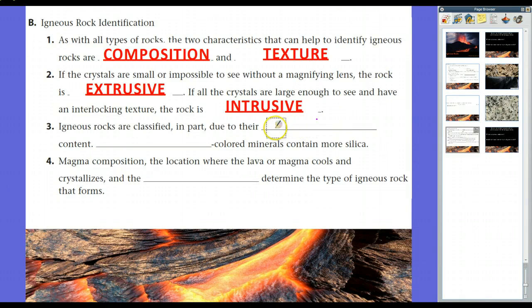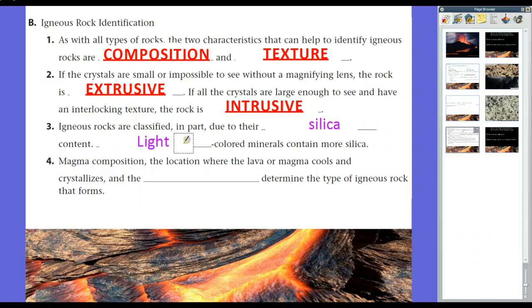So, igneous rocks are also classified in part due to their silica content. Remember, there are two types of minerals. Silicates. Silicates include silicon and oxygen in their minerals, and then non-silicates are ones that do not. And, of course, most minerals, 75% on Earth, include either silicon or oxygen in there. Most of the time, light-colored minerals will contain more silica. Sand, remember, is silicon, or silicates. So, remember, most sand is light-colored. You can have dark-colored sand in some cases, and those are oftentimes made from igneous rocks too, but that's just there for your information.